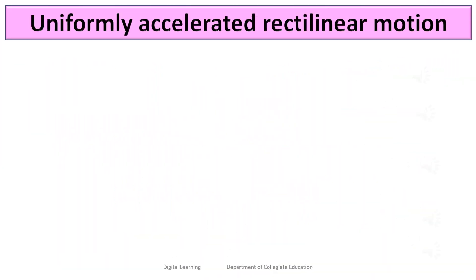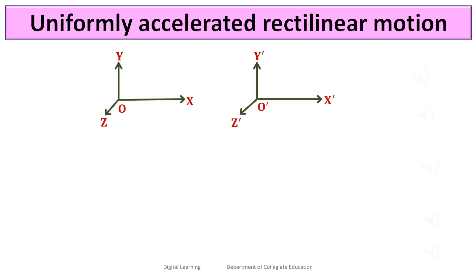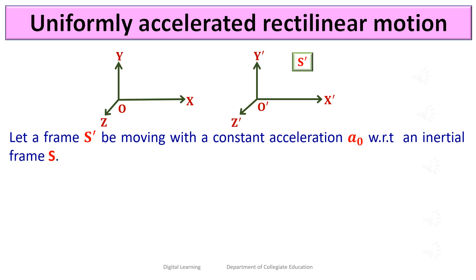We know that all accelerated frames are non-inertial frames. A non-inertial frame is a frame of reference in which Newton's laws of motion are invalid. To prove that, let us consider a uniformly accelerated frame in rectilinear motion. Let a frame S' be moving with a constant acceleration A0 with respect to an inertial frame S.